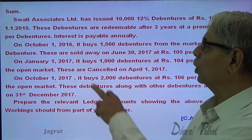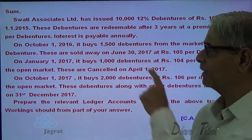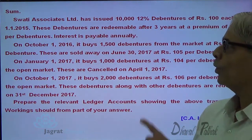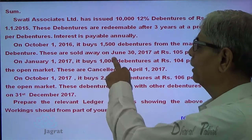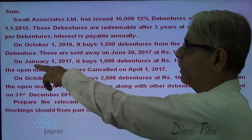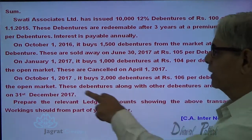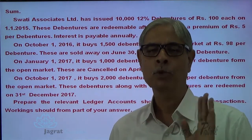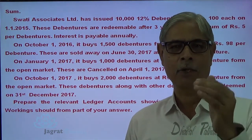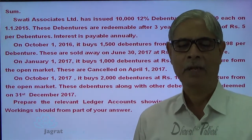After considering this point, there are no other relevant transactions in 2016. So the transactions in 2016 are: purchase of own debentures and interest payment at the end of the year, then balances carried forward. In 2017, there are many transactions: sale of own debentures on 30th June, purchase of 1,000 debentures on 1st of January at Rs. 104, cancellation on 1st of April, purchase of 2,000 debentures on 1st of October, cancellation on 31st of December, and redemption of all remaining debentures on 31st of December. Majority of the transactions are in 2017.